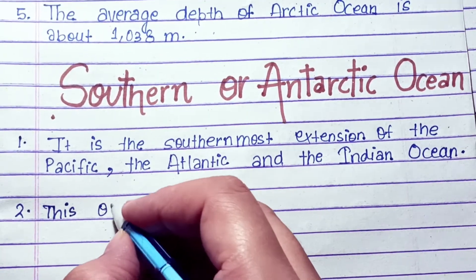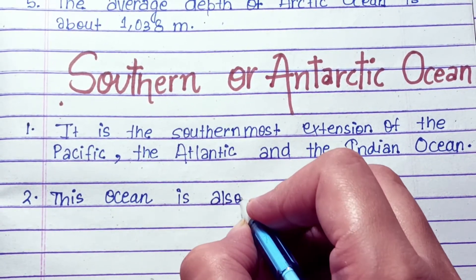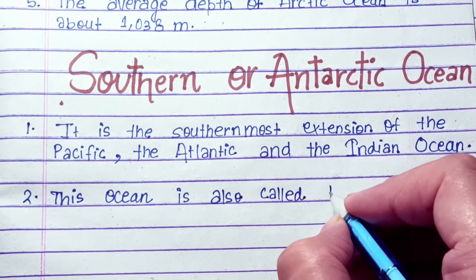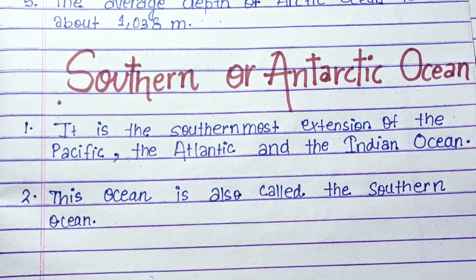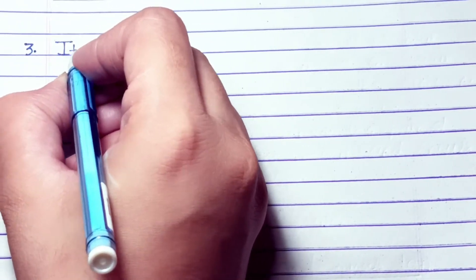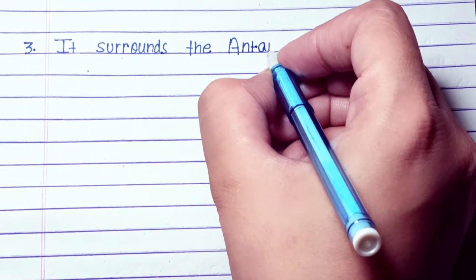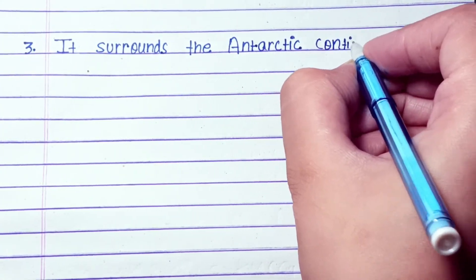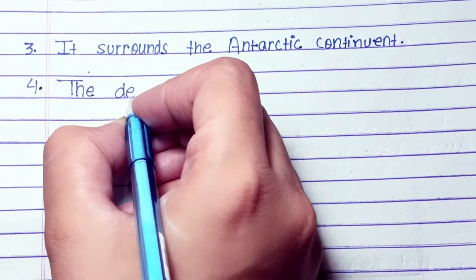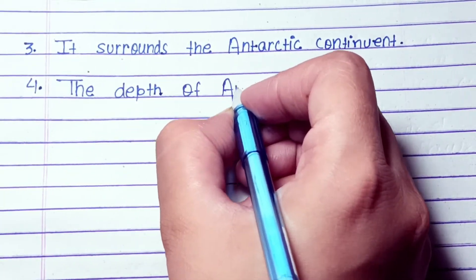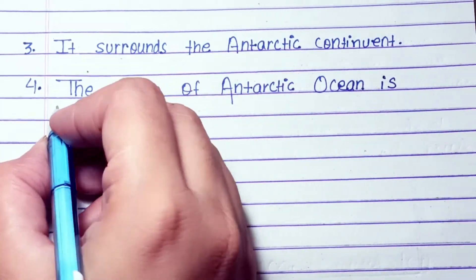Southern or Antarctic Ocean: it is the southernmost extension of the Pacific, the Atlantic, and the Indian Ocean. This ocean is also called the Southern Ocean. It surrounds the Antarctic continent. The depth of the Antarctic Ocean is 7,434 meters.